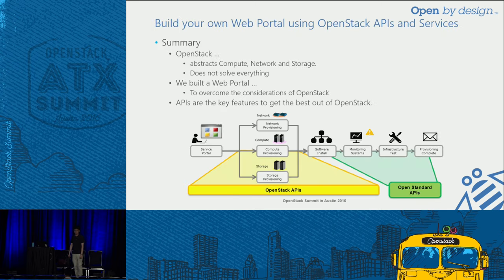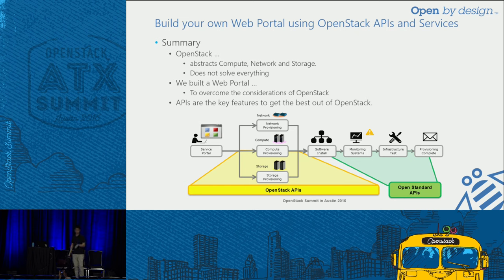That's the end of my session. In summary, OpenStack abstracts compute, network, and storage, and it does not solve everything — we need to build something on top of it. So we built a web portal to overcome these considerations. When we really build these types of solutions, APIs are really the keys. With those APIs, we can connect a lot of multiple technologies and make it look as if it is a single application.